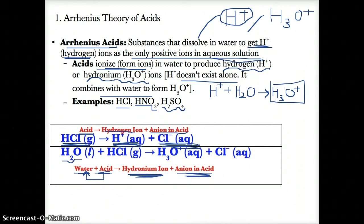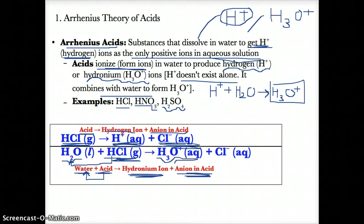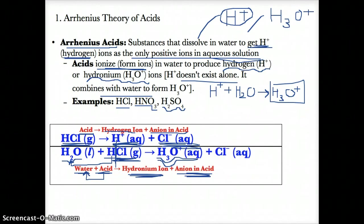For example, you have water and the acid HCl gas, hydrochloric acid. When they react together, the H from HCl is donated to H2O, giving you the hydronium ion H3O+ (aq) as one ion, and the other ion is Cl- that separates from the H.